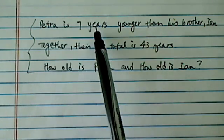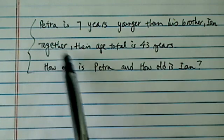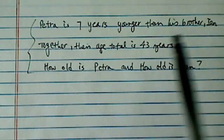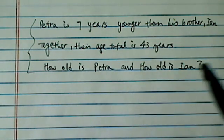So the problem says Petra is seven years younger than his brother Ian. Together their age is 43 years and then they ask how old is Petra and how old is Ian.